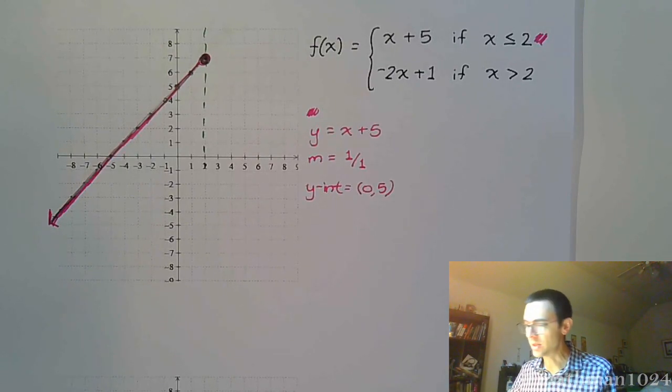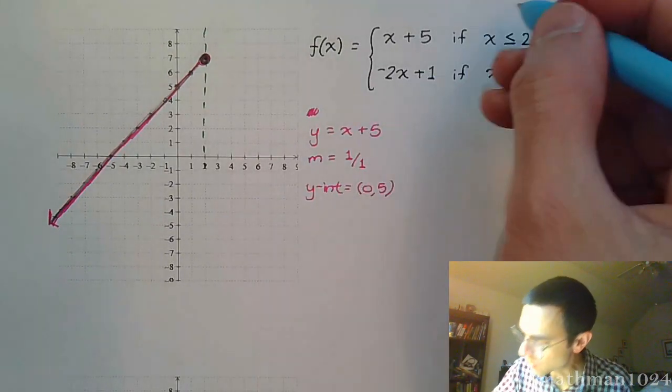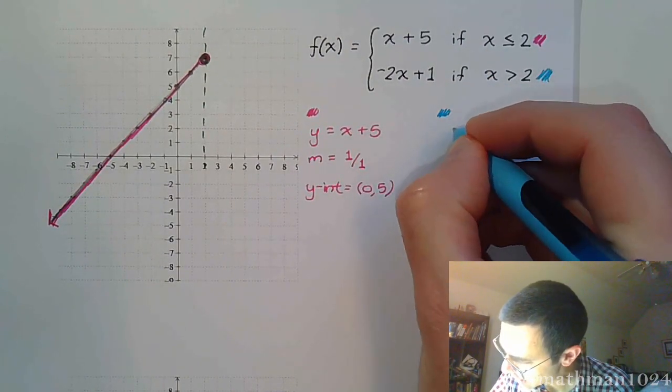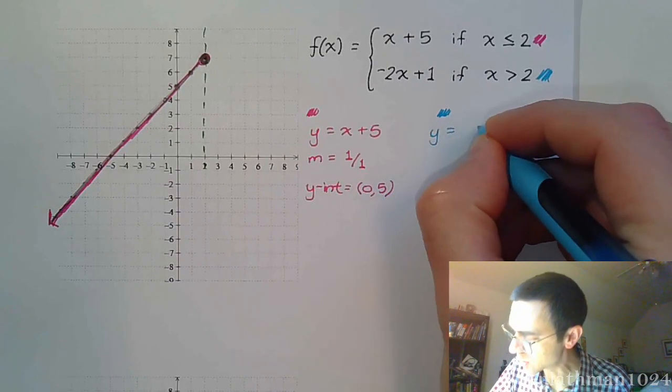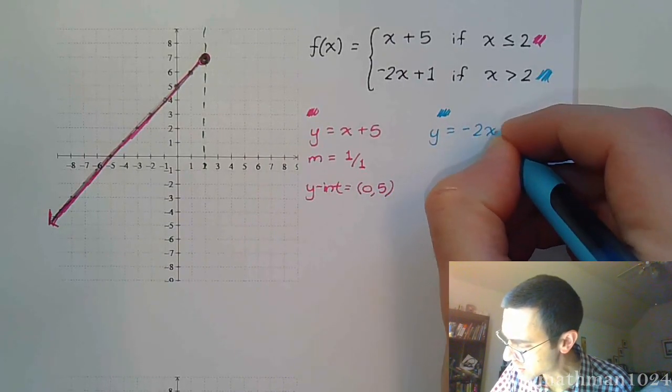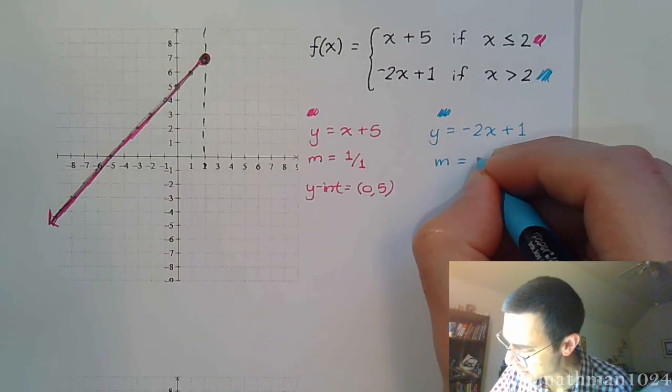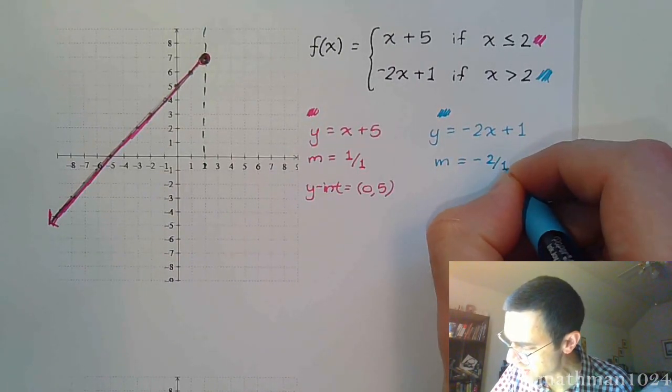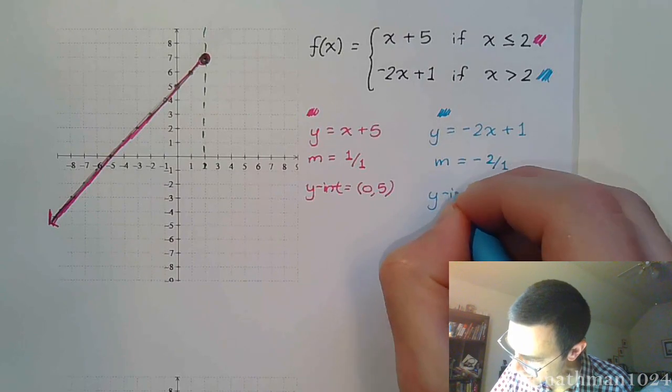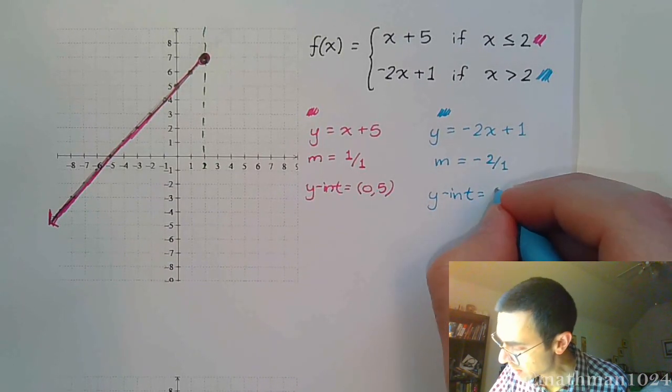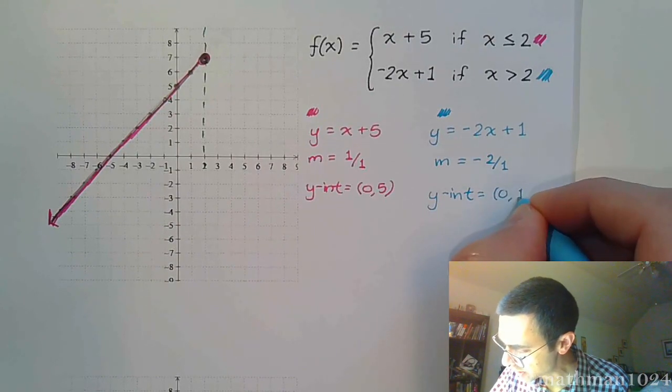Now let's look at the other piece. This says negative 2x plus 1. We're going to do this guy in blue. Think of this as y equals negative 2x plus 1. We can identify the slope, that's negative 2 over 1, and the y-intercept, which is (0, 1).